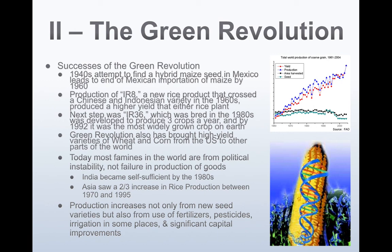IR36 not only had a higher yield and could be grown three times a year, but it was also highly resistant to pests, meaning less likelihood of crop loss. High-yield varieties of wheat and corn have also been brought from the U.S. to other parts of the world. Today, most famines in the world are from political instability, not a failure in production. India became self-sufficient in the 1980s — a huge deal for one of the most populous countries. Asia saw a two-thirds increase in rice production between 1970 and 1995 because of IR8 and IR36. Production increases came not only from new seed varieties, but also from fertilizers, pesticides, irrigation, and significant capital improvements like mechanized tractors and combines.